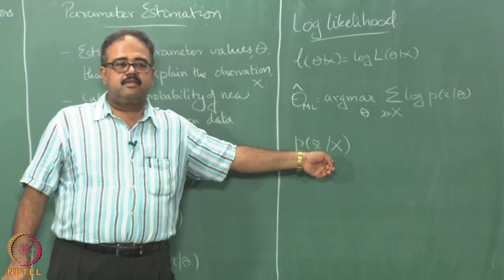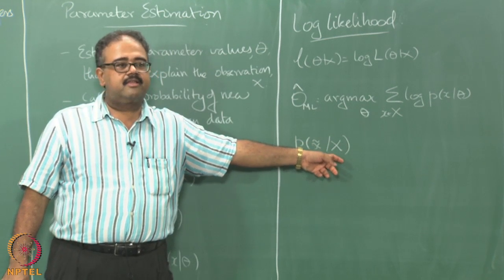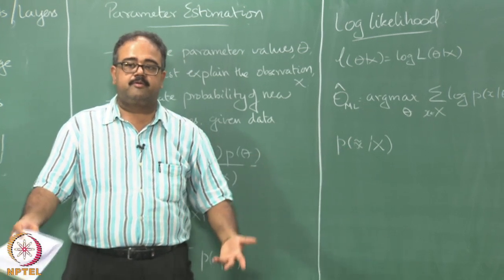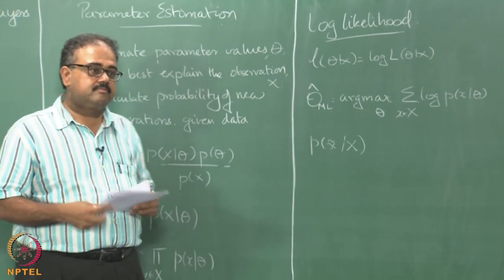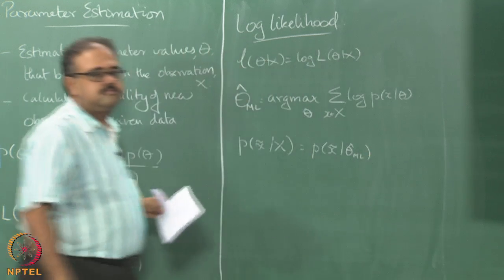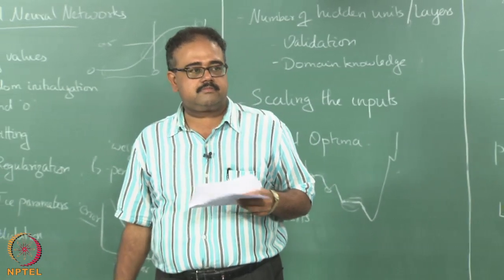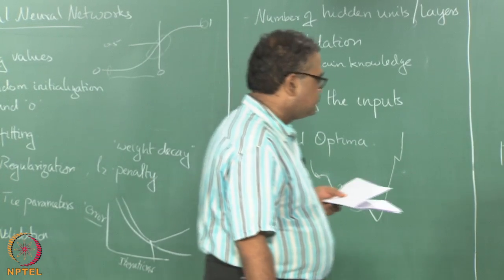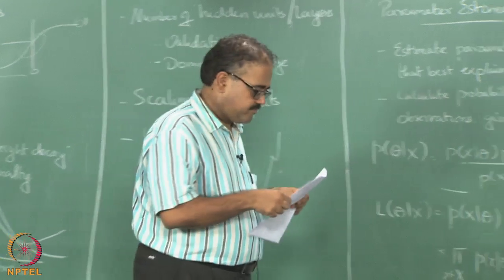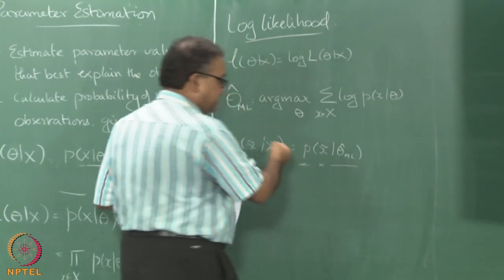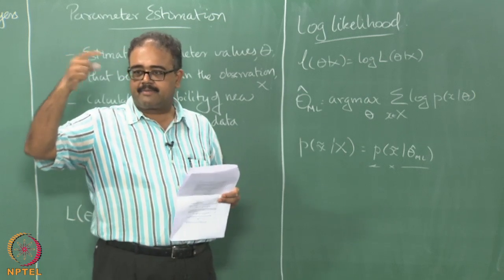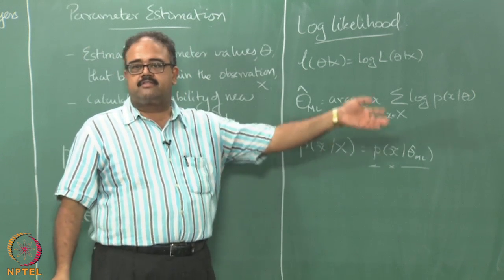Suppose a new data point x-tilde comes in. What is the probability of x-tilde given the training data X? This is exactly what we did in the logistic regression case. We found the maximum likelihood parameters for beta, the maximum likelihood estimates for the parameters beta, and then plugged them back in to estimate the probability.